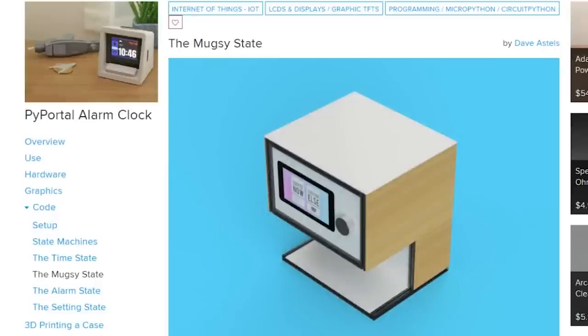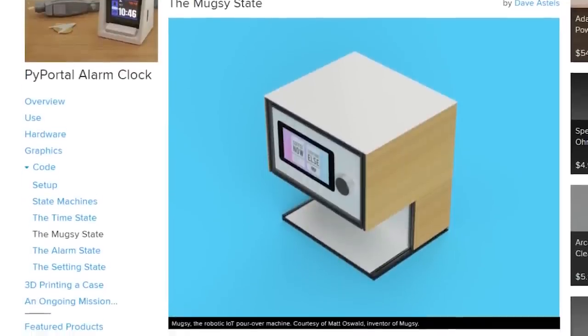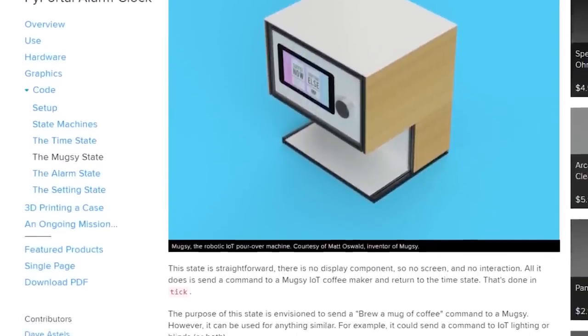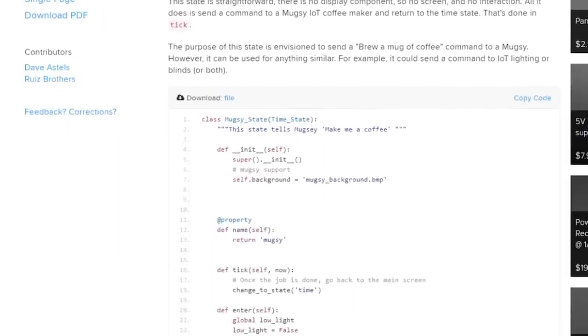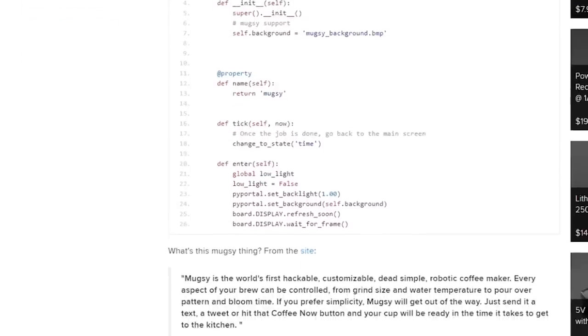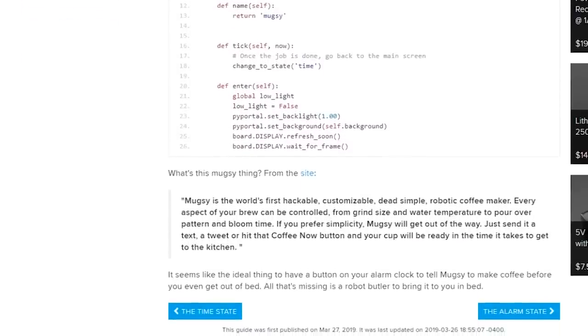The last little bonus feature here is the ability to trigger another IoT device from the touchscreen. By default, there's a coffee cup icon for triggering a mugsy open source coffee maker, but you can change the code to make your IoT lights turn on, open your blinds, or something else.